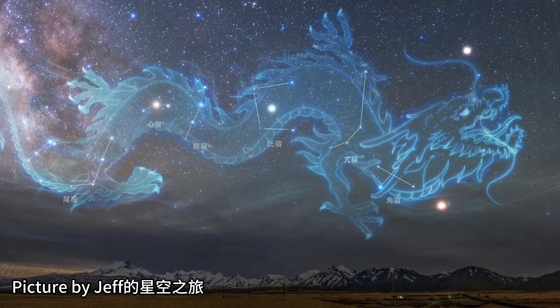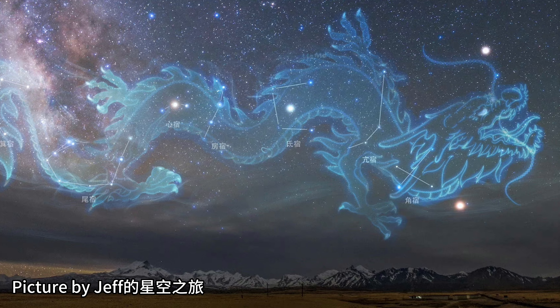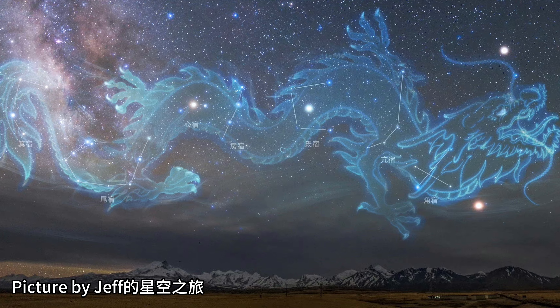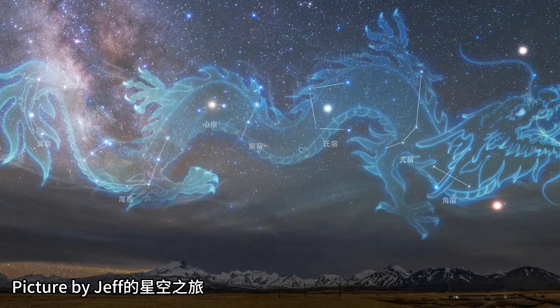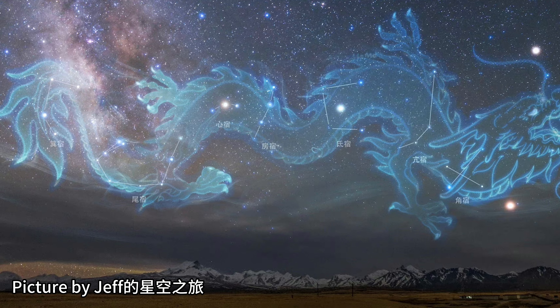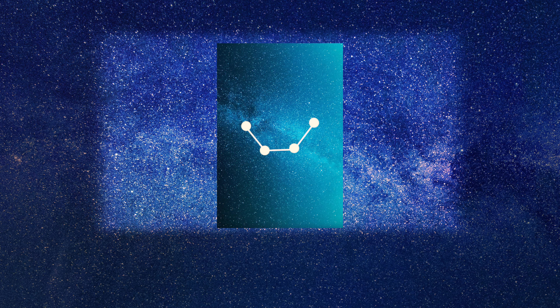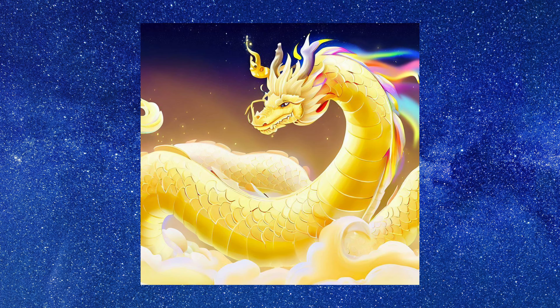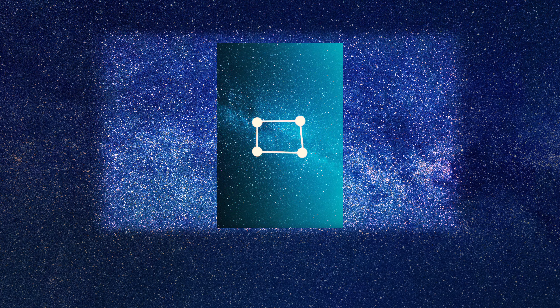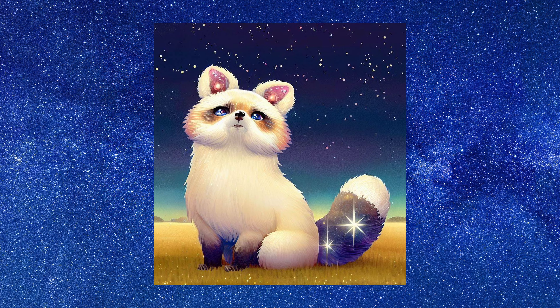Hey there. Today we're diving into the enchanting world of the Azure Dragon, also known as Qing Long. This celestial being holds a special place in ancient Chinese astrology as the deity of the East, associated with the vibrant spring season and the element of wood.